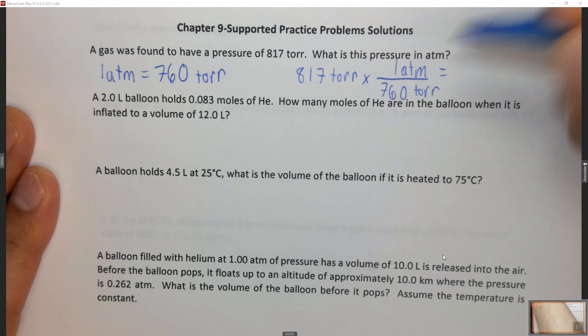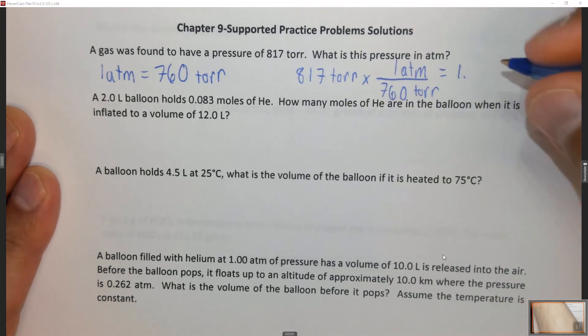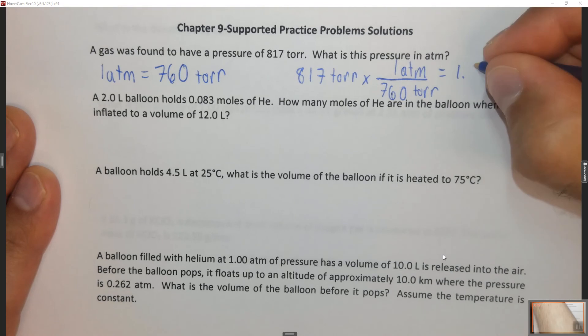and when we do that math to three sig figs, because this has three sig figs, we get 1.08 atmospheres.